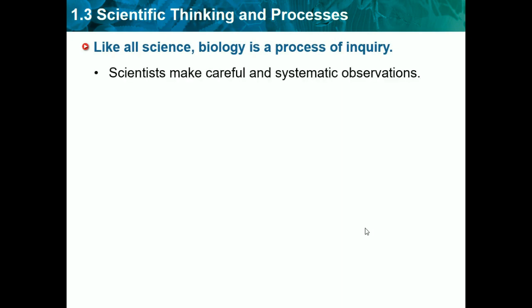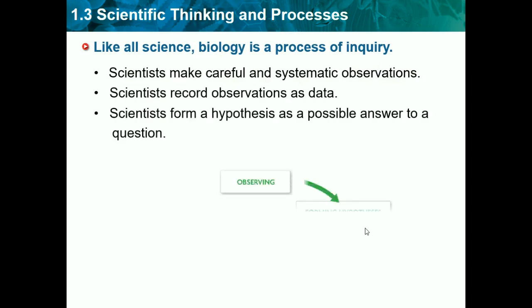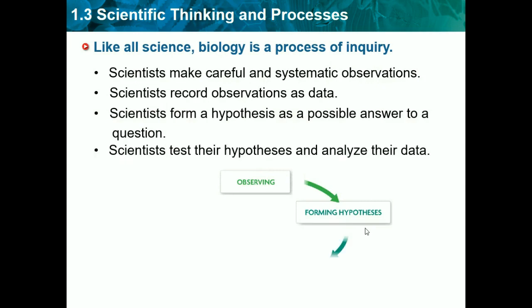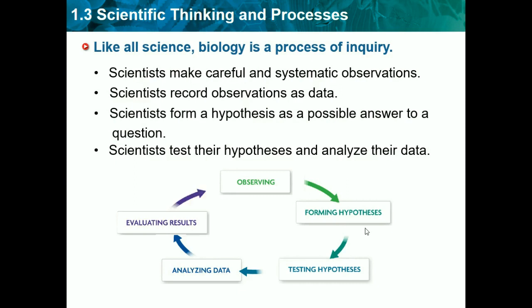Scientists make careful and systematic observations and record them as data. They form a hypothesis as a possible answer to a question, and they test their hypothesis and analyze their data. So this is basically the scientific process: first observing, then asking a question, which leads back to inquiry, and then we form a hypothesis — a scientific guess to the answer of a problem — then we test our hypothesis using an experiment.